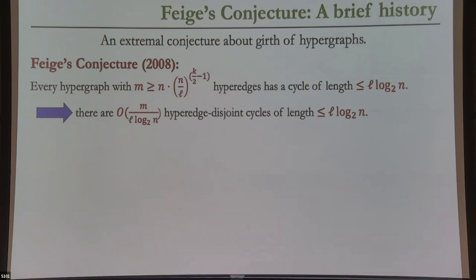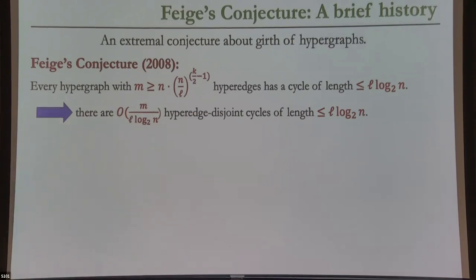The reason Feige cared about this was because of a simple procedure: start from a hypergraph, find a cycle of length L·log N — it's got to have one — remove all those hyperedges. Now you have a residual hypergraph; if it's still large, keep repeating. In principle, if you start with a large enough multiple of the threshold, you should be able to partition almost all edges into cycles, getting something like a cycle partition. Feige observed that this actually gives a non-trivial refutation of KXOR.